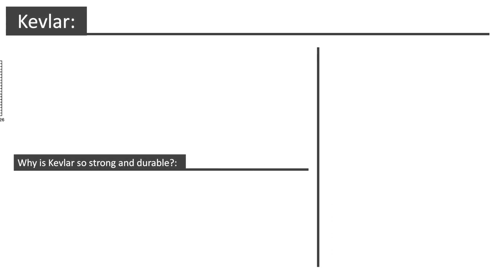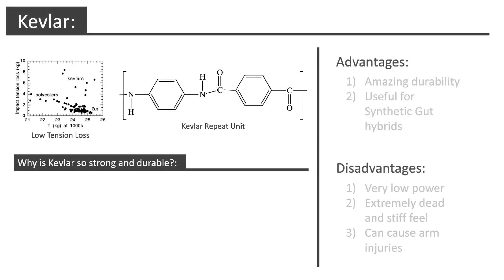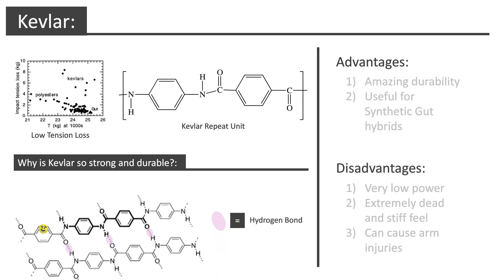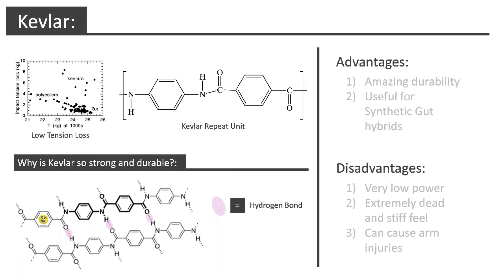Kevlar strings are the toughest of all tennis strings. This property can be explained due to the fact that the rigid, closely packed chains can form hydrogen bonds between the chains due to the amide functional groups, increasing the overall strength of the material. This property also means they have the lowest tension loss of all the string types, as can be seen in the graph here.